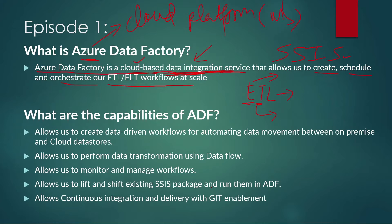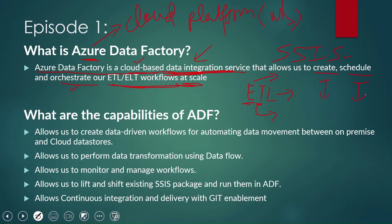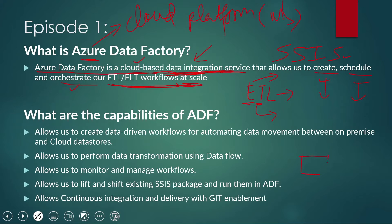So how do we achieve the target of integrating the data? It's by creating, scheduling and orchestrating our ETL workflows at scale. We have an option to create workflows, which are called pipelines in ADF terminology. We can create ADF pipelines which are responsible to perform certain operations, and then we can schedule that pipeline to run on a daily or monthly basis. A pipeline is nothing but a set of activities.